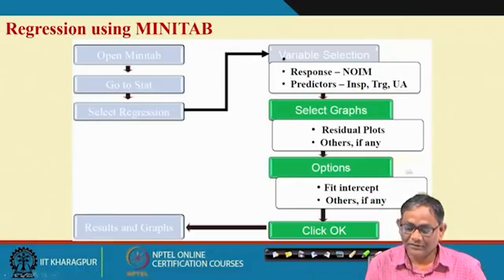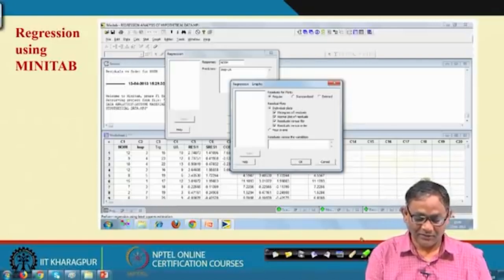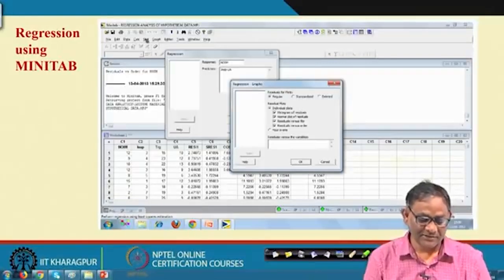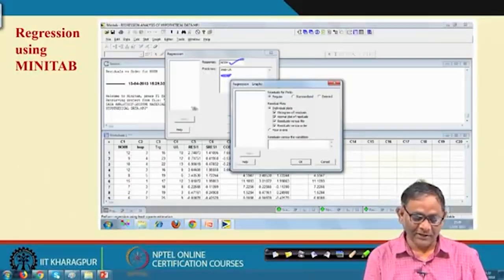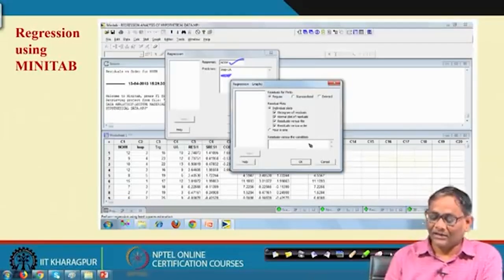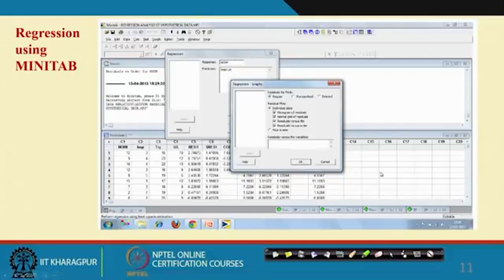Looking at the Minitab snapshot: you enter the response values and predictor variables, select the plots you want, and click through the options. The output shows the data in the first part, the coefficients and fitted or predicted values in the second part, along with the errors. If you collect data and use Minitab, you will get the solution to the regression equation.